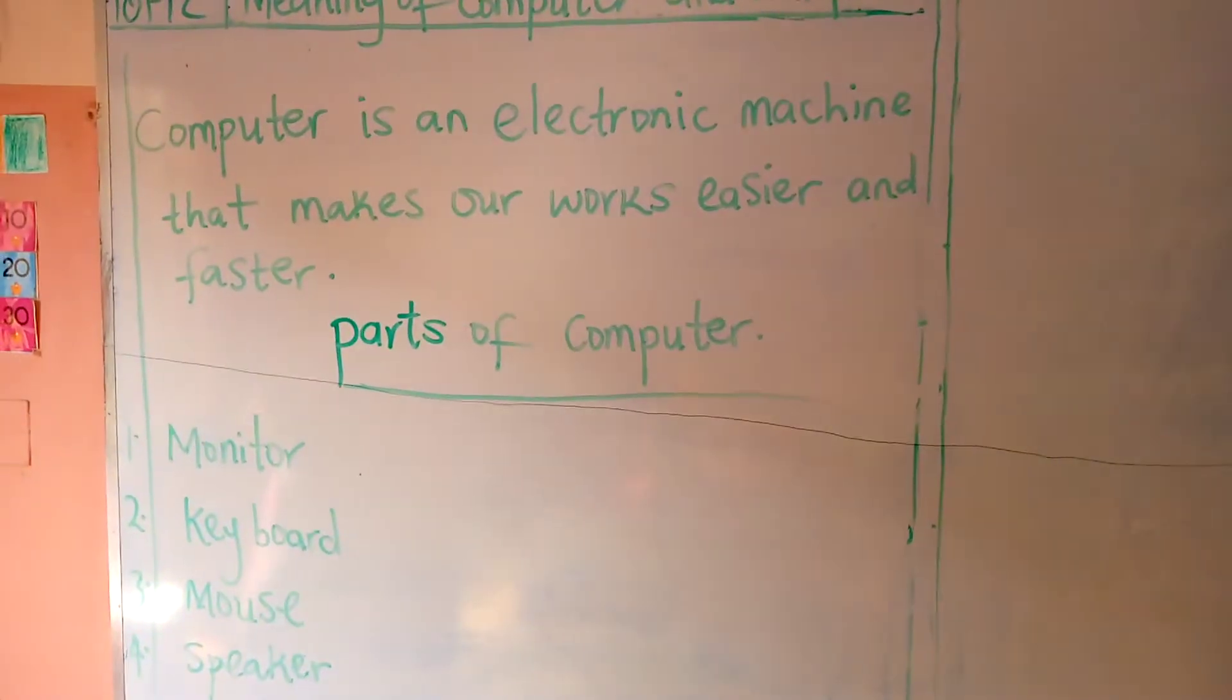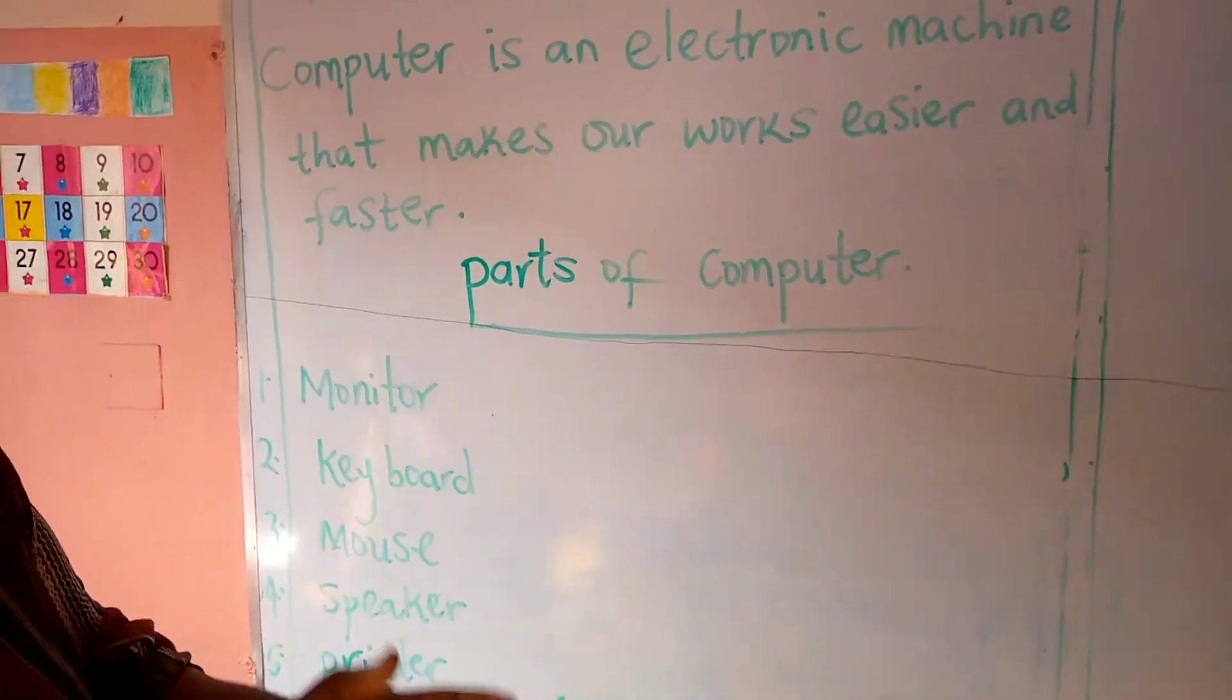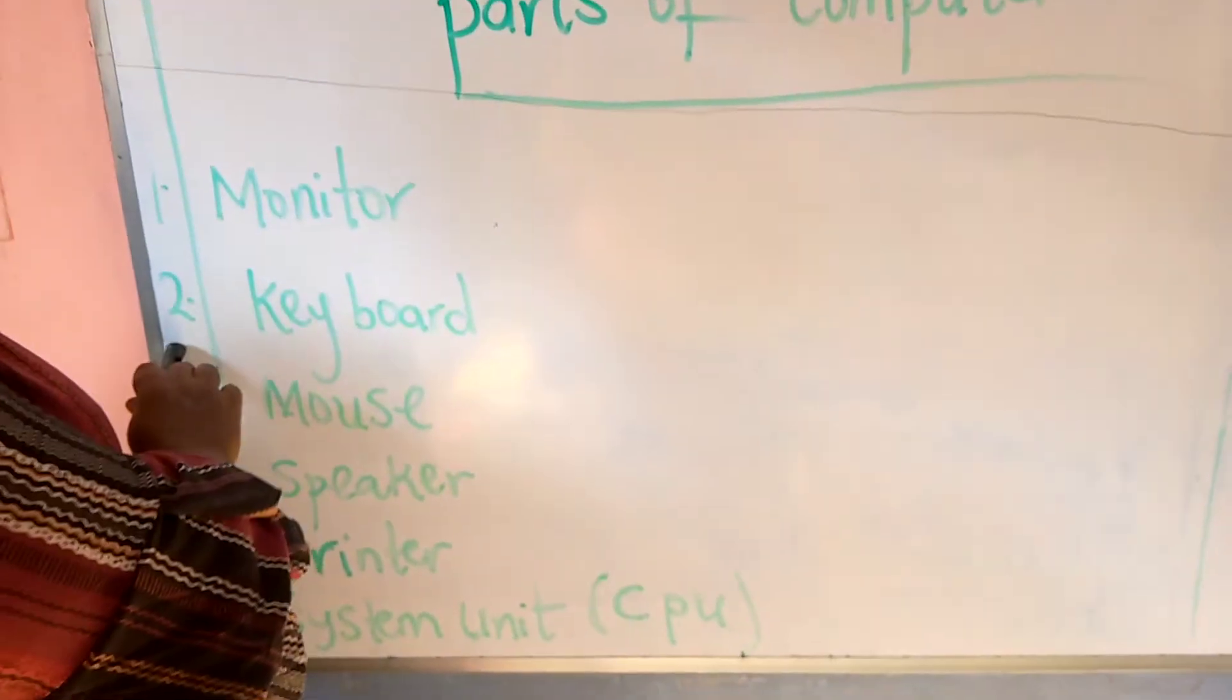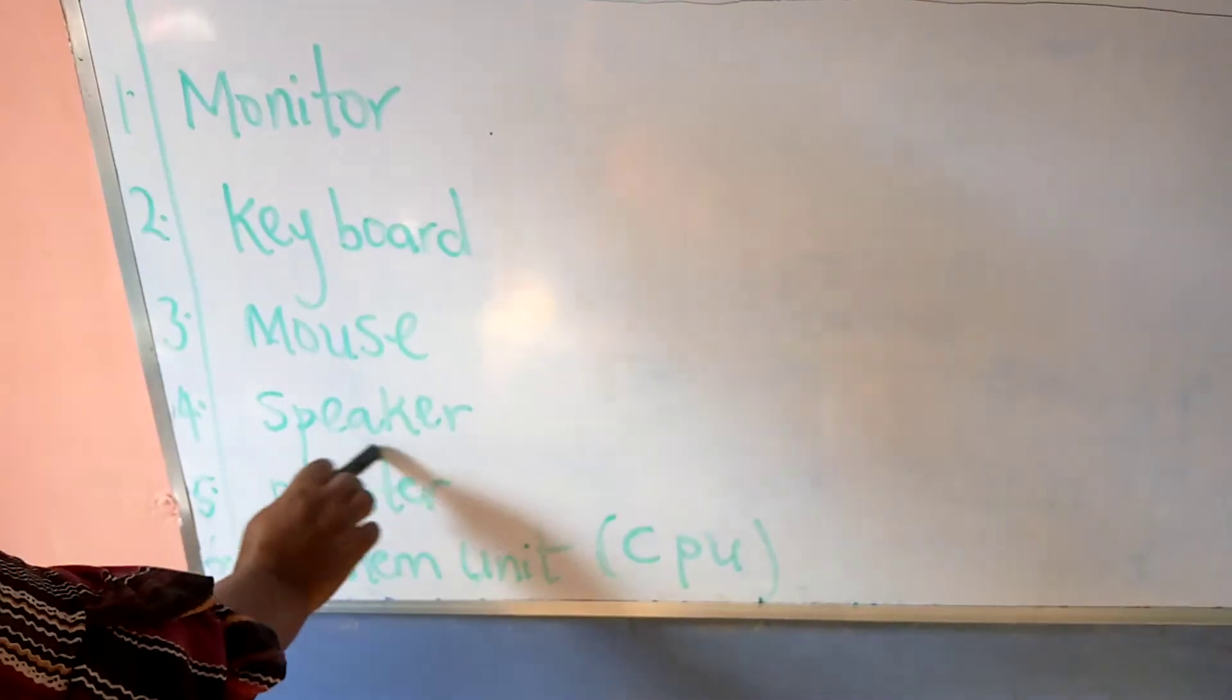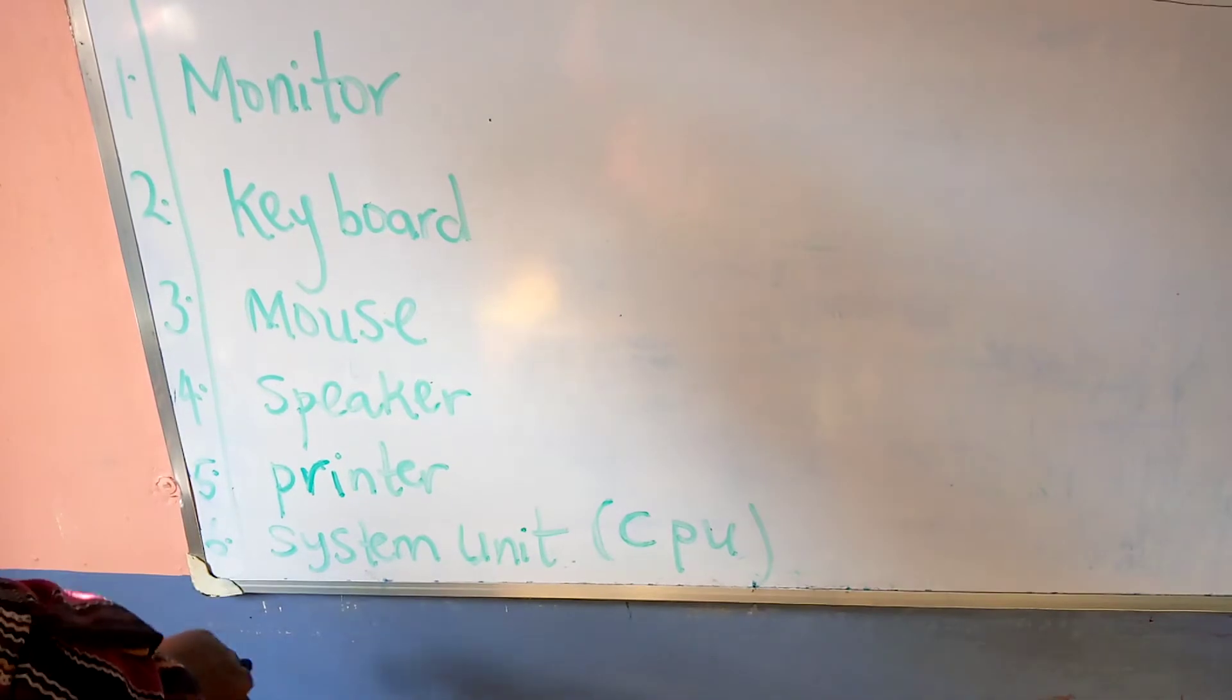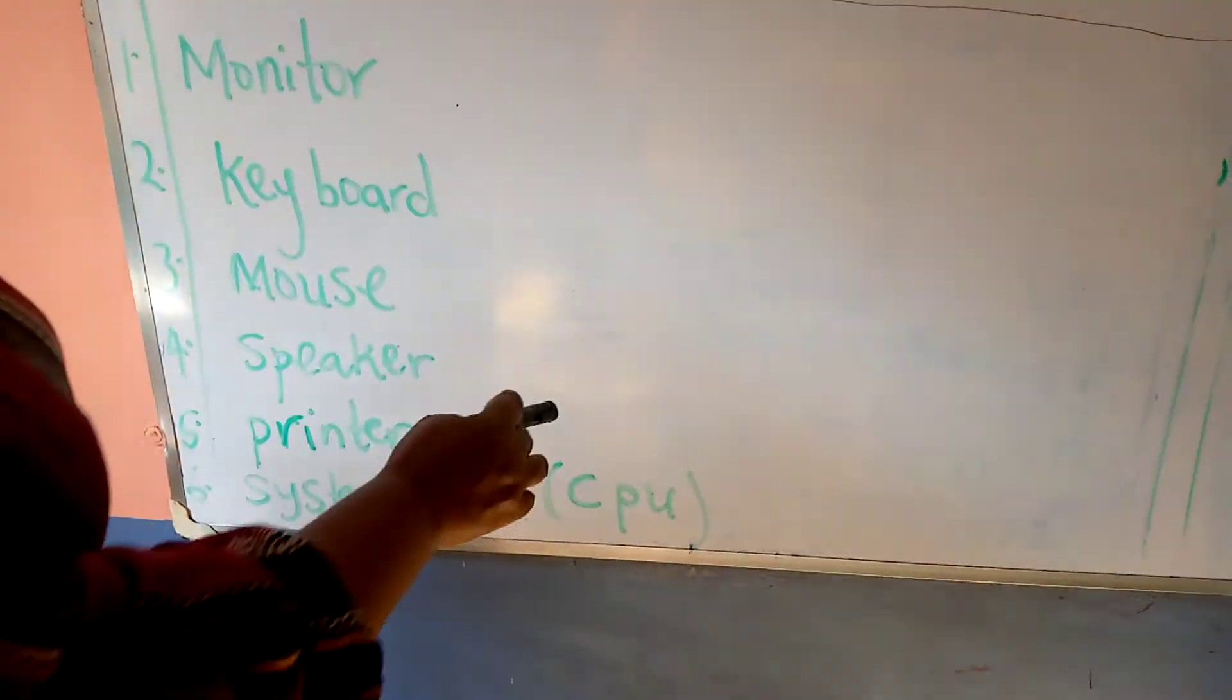Now we want to look at the parts of computer. What are the parts of computer? Number one: monitor. Number two: keyboard. Number three: mouse. Number four: speaker. Number five: printer. Number six: system unit, also known as CPU.